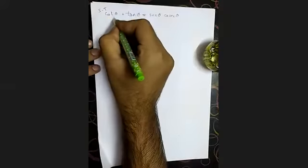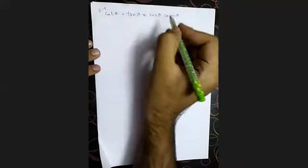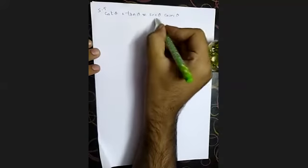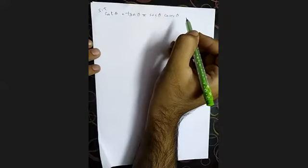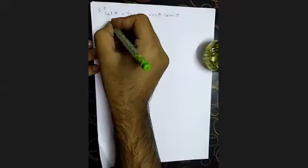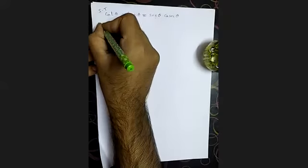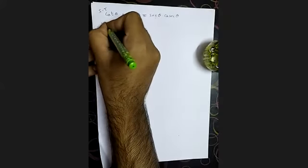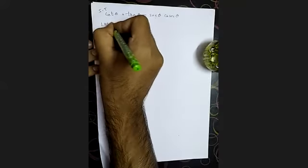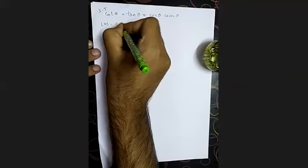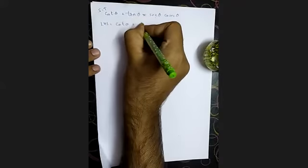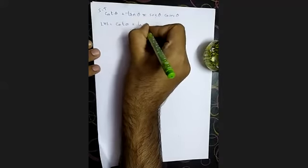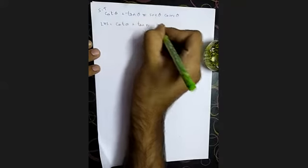I have to show that cot theta plus tan theta is equal to secant theta into cosecant theta. So first of all, LHS is equal to cot theta plus tan theta.